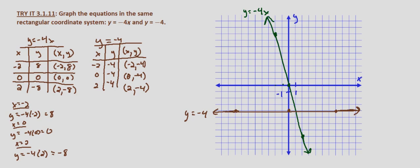So anytime we have a variable involved, we're going to end up with a slanted line. And when there's not a variable involved—if it's y equals a number—we're going to end up with a horizontal line. This was an example to show the difference between those two types of equations.